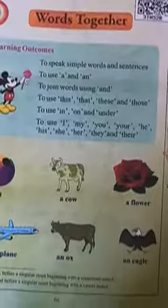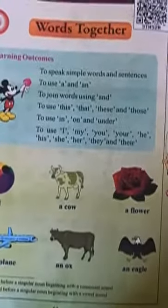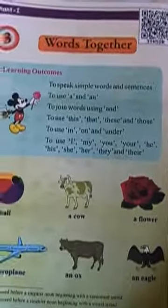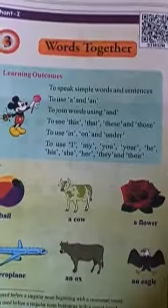To use 'in', 'on', and 'under'. To use pronouns: I, my, you, he, his, she, her, they, their, it. Examples: a ball, a cow, a flower, an aeroplane, an ox, an eagle.